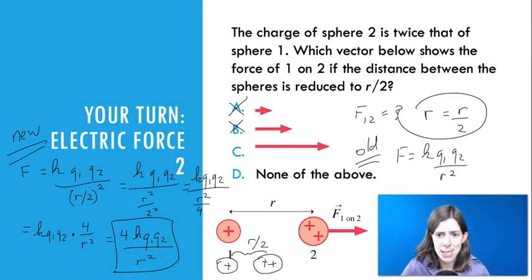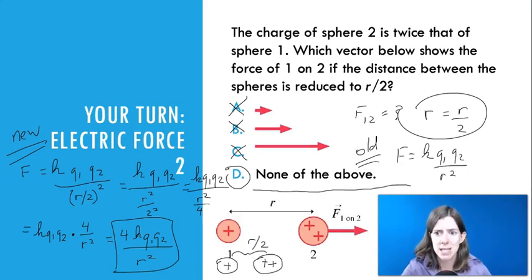The new force now has an extra factor of 4. That means that the new force is 4 times as big. If we look at the answer choices, this arrow is actually about twice as big. So, this was actually not the right answer either. The answer is actually none of the above because the force was actually 4 times as big when you cut the distance to half.